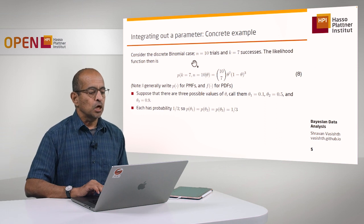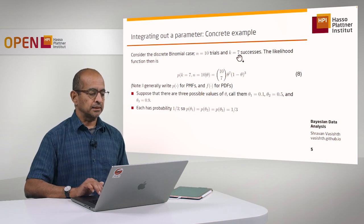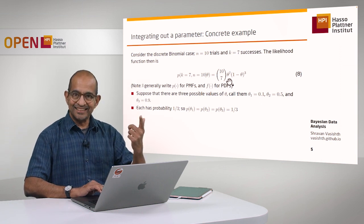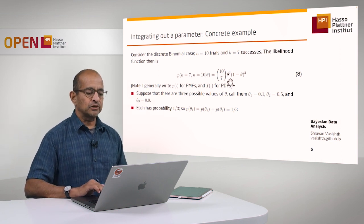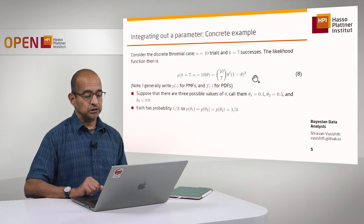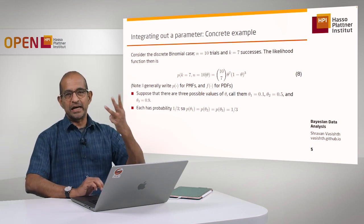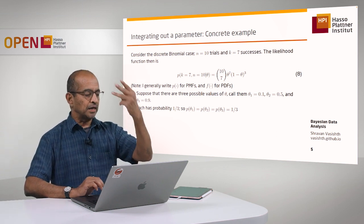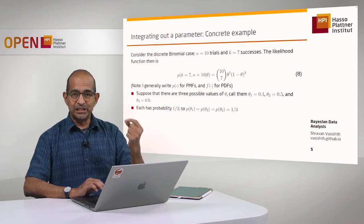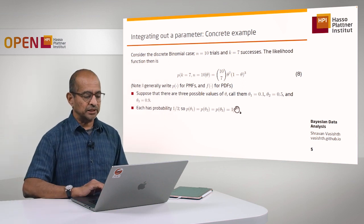Let's clarify this with an example. Think about the case where you have 10 trials — the binomial discrete case with seven successes. The likelihood function we have is this binomial function; it's a function of theta. Everything else is fixed: 10 and 7 are fixed. Let's suppose there are only three possible values for theta: 0.1, 0.5, and 0.9. And each of these three possible values has probability one third, so the total probability sums up to one.